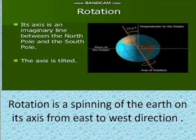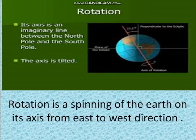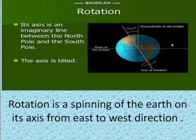What do you mean by rotation? Rotation is the spinning of the earth on its axis from the east-west direction. What do you mean by axis? Axis is an imaginary line between the north pole and the south pole.